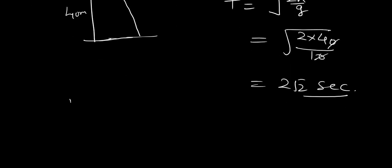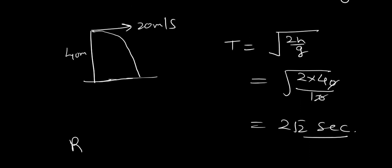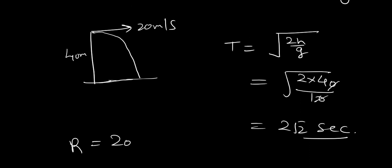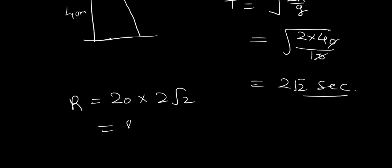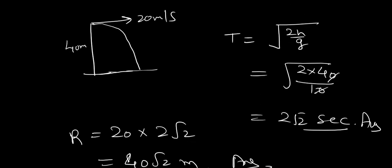And now first part is taken, range will be equals to initial velocity into time of flight, which is 2 root 2. So, it will be 40 root 2 meter. So, this is answer to the first part, and this is answer to the second part of the question.